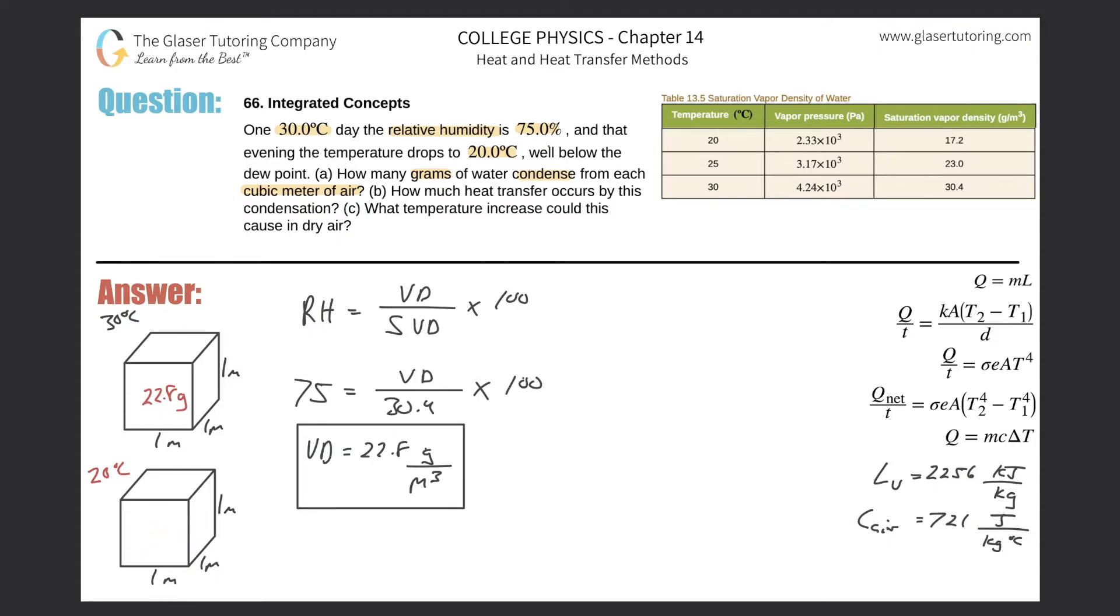And now this box is going to be under 20 degrees Celsius air. But if you notice, look back at the table over here, what's the saturation vapor density? The saturation means the maximum. So it's only 17.2 grams. That's the max that this air can hold. That's the maximum mass.